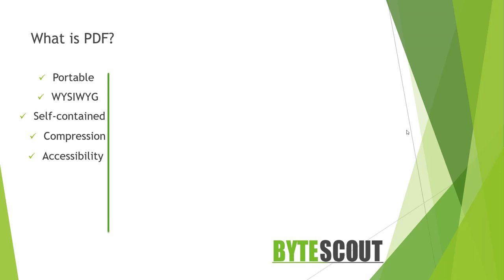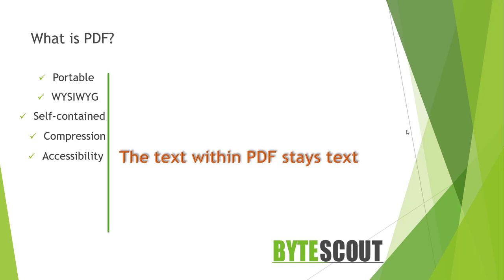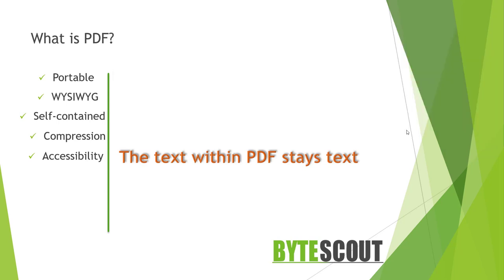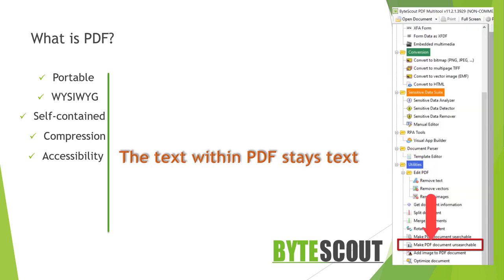Accessibility is an automatic part of the PDF creation process. The text within a PDF stays as text, meaning search engines or assistive devices such as screen readers or ByteScout's document parser template editor tool can interpret, parse, and present the information in various ways. Accessibility can also be disabled, meaning you can make a PDF unsearchable — a feature also provided by ByteScout's free utility PDF Multi-Tool.